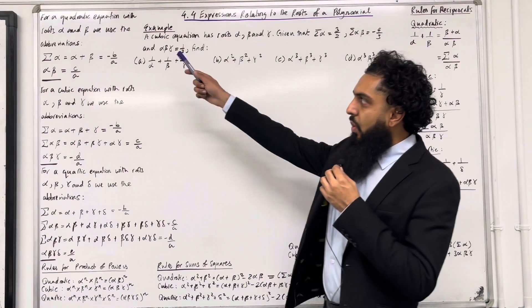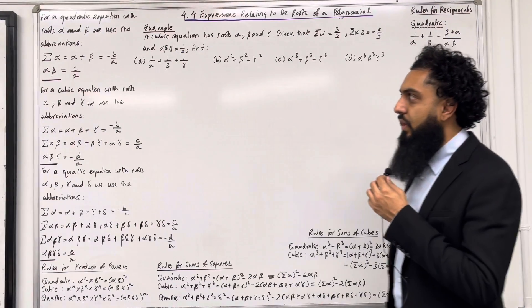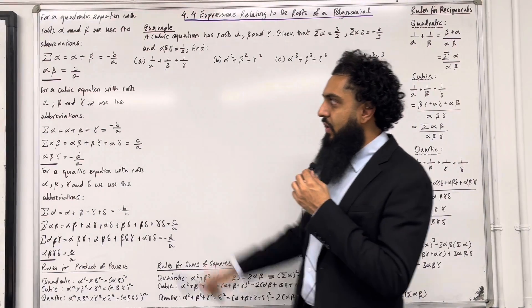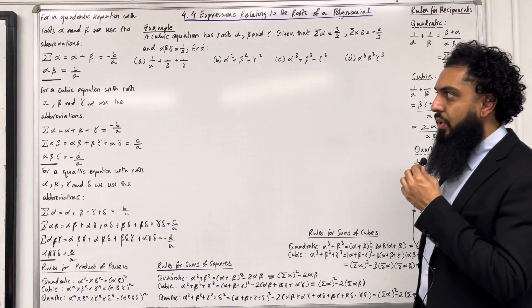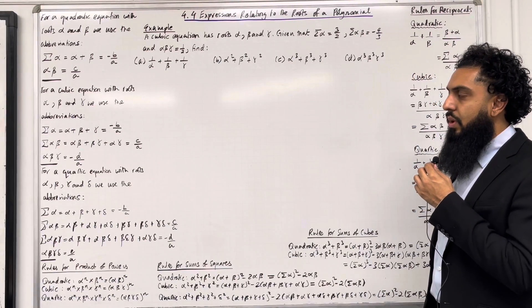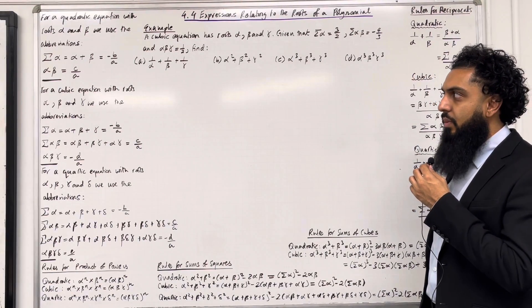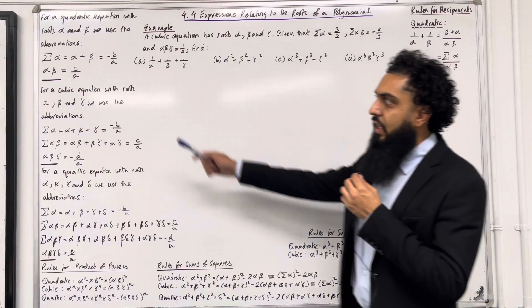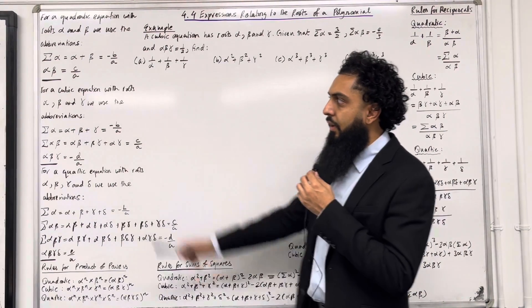For a quadratic equation with roots alpha and beta we use the abbreviations. Sum of alpha, the sum of the individual roots, is equal to alpha plus beta which is equal to minus b over a. Alpha beta is equal to c over a.